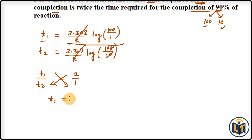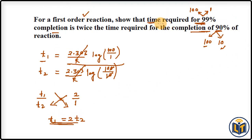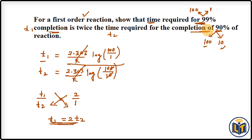After cross multiplication, we get T1 = 2·T2. This confirms that the time required for 99% completion is twice the time required for 90% completion of the first-order reaction.